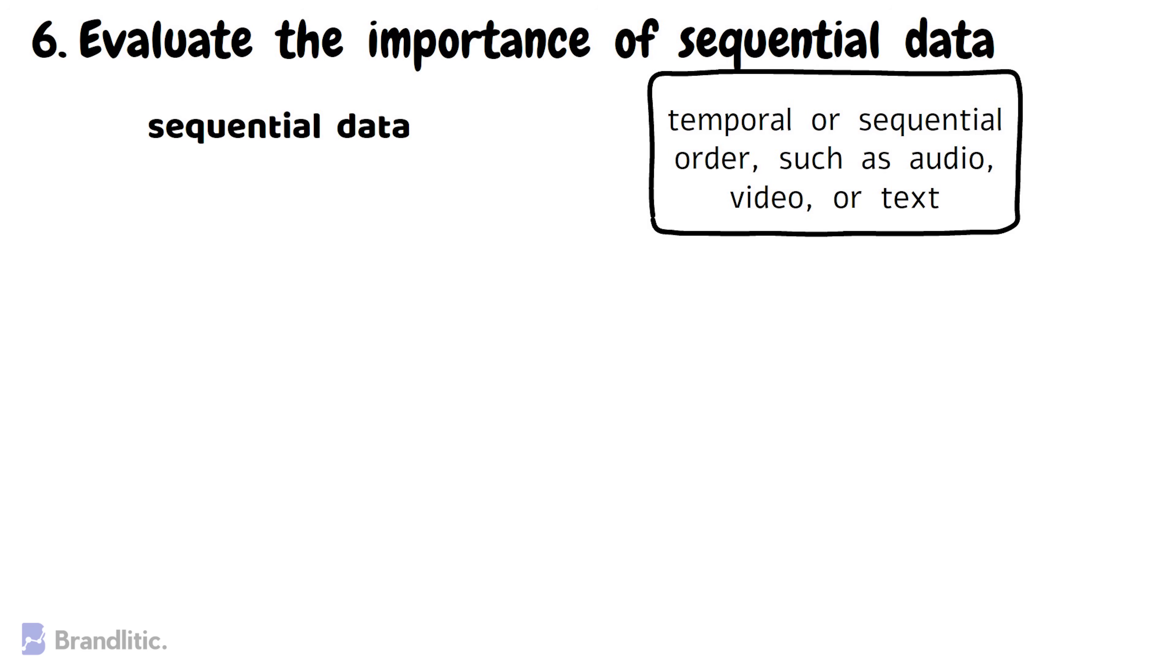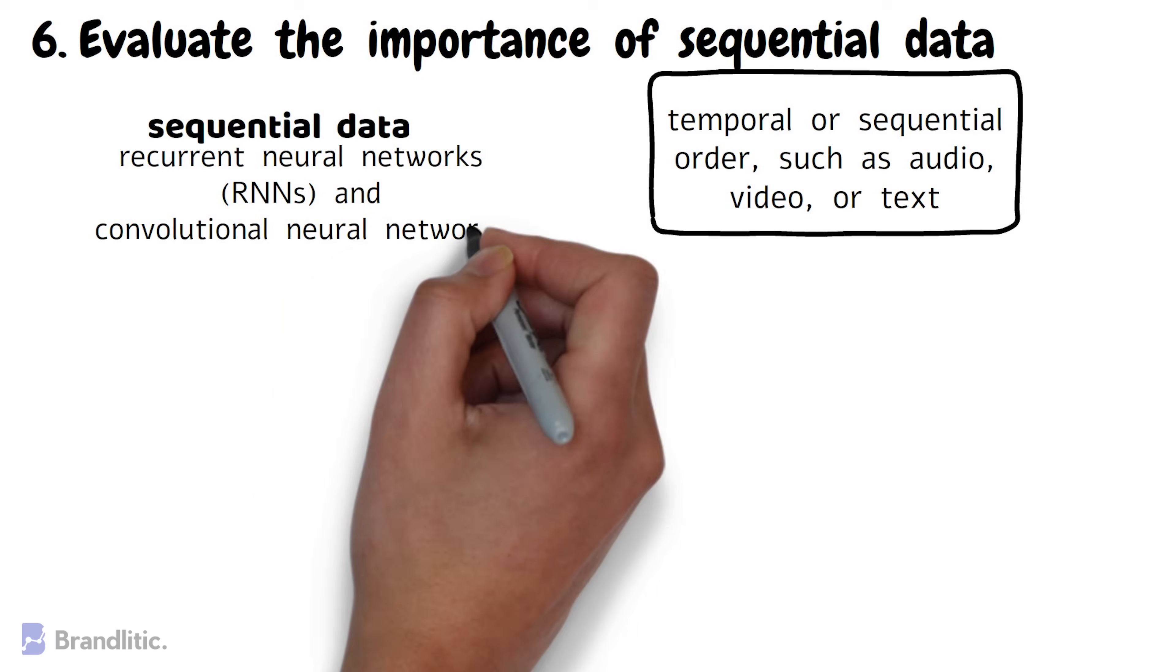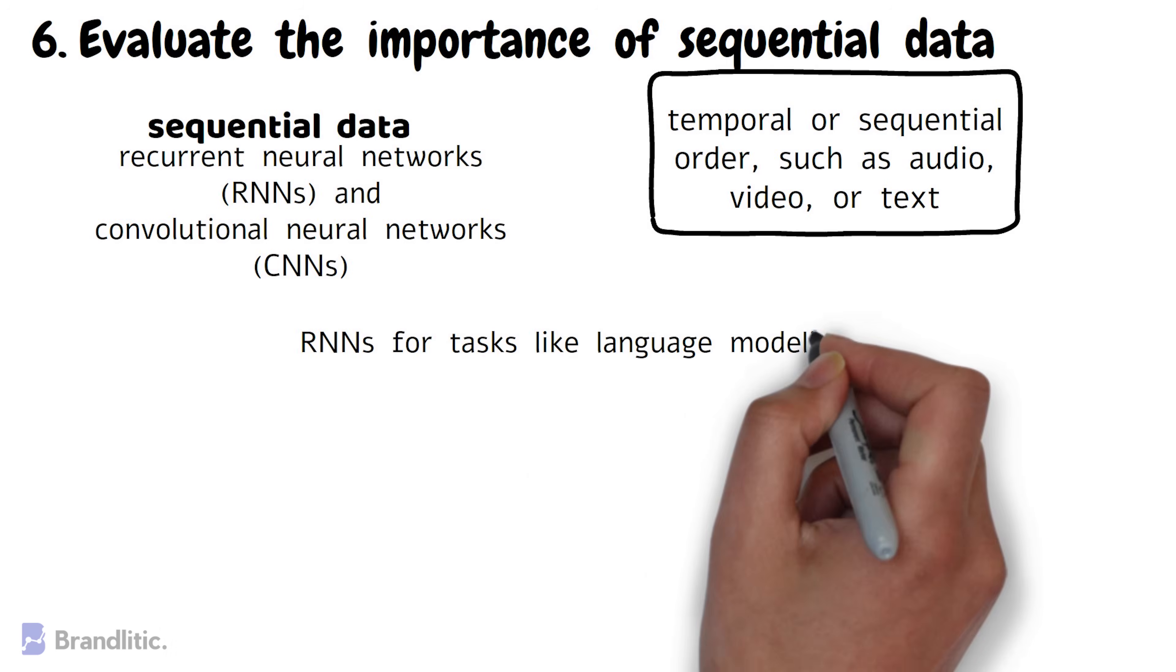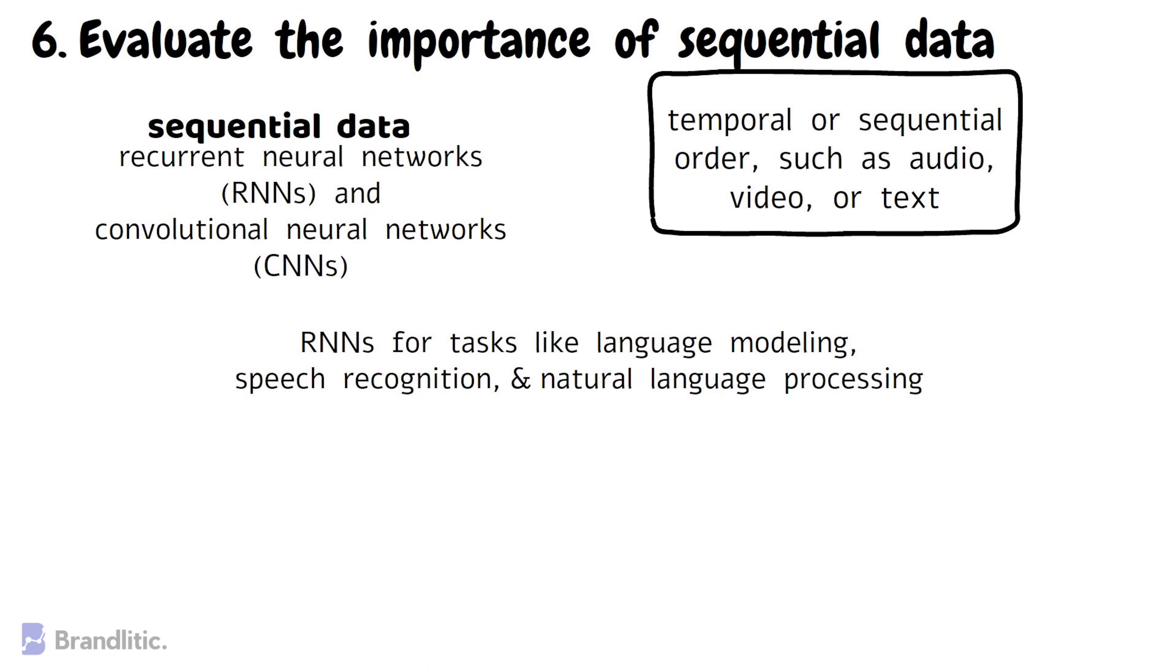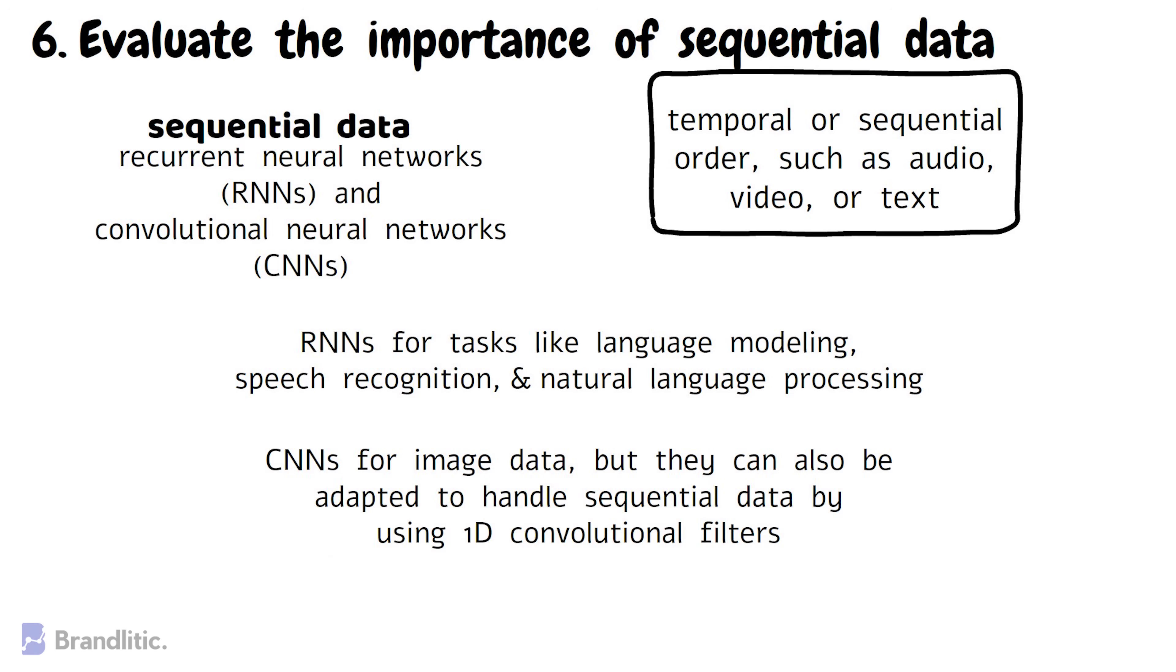The most common types of neural networks that can handle sequential data are recurrent neural networks or RNNs and convolutional neural networks or CNNs. RNNs are specifically designed for processing sequential data and have the ability to maintain a memory of previous inputs. This makes them a good choice for tasks like language modeling, speech recognition, and natural language processing. CNNs, on the other hand, are typically used for image data, but they can also be adapted to handle sequential data by using 1D convolutional filters.